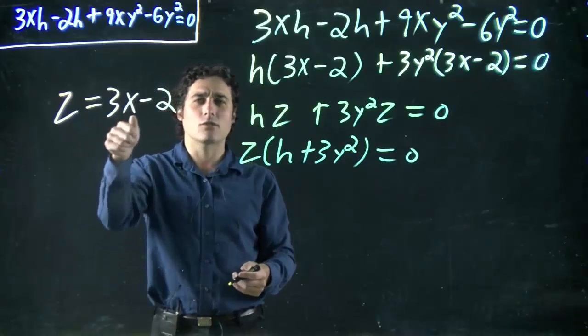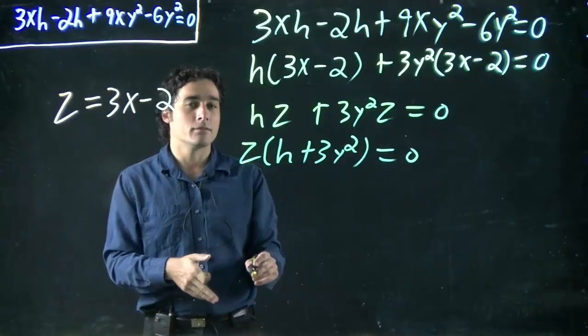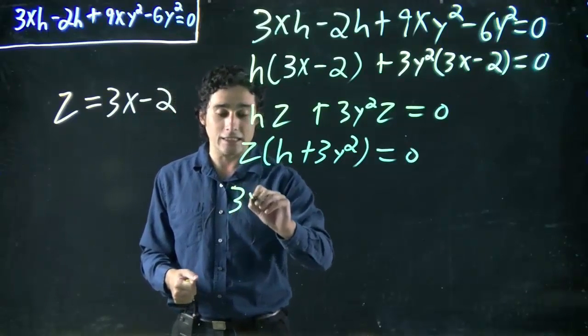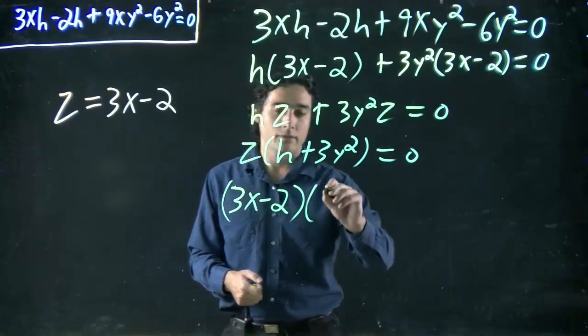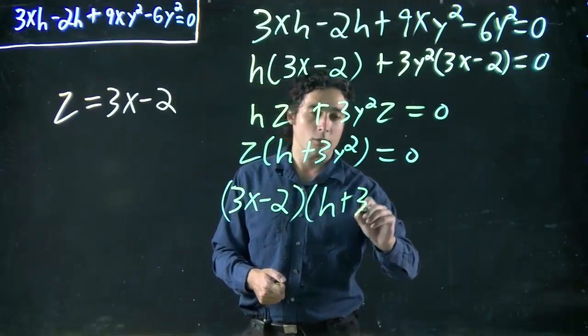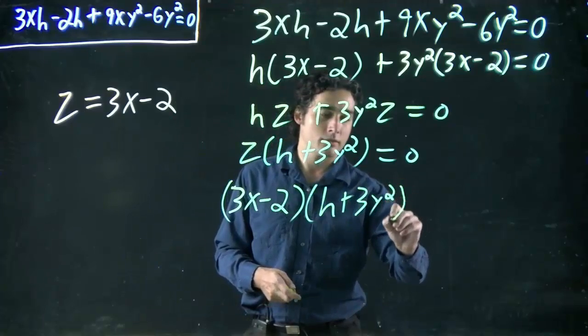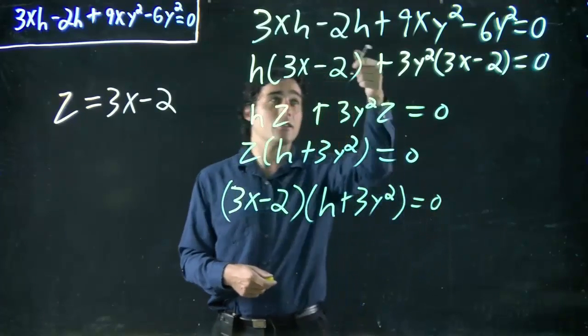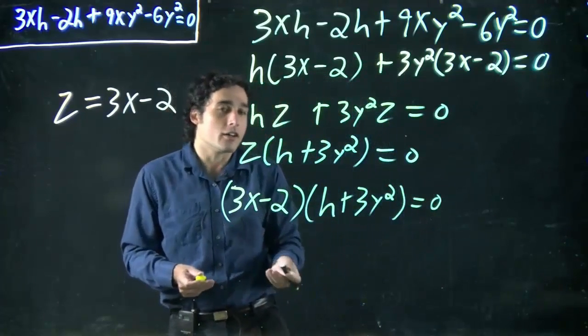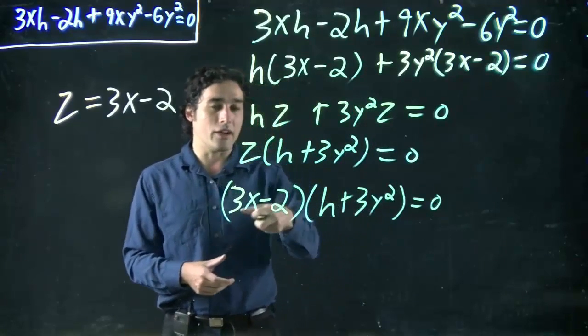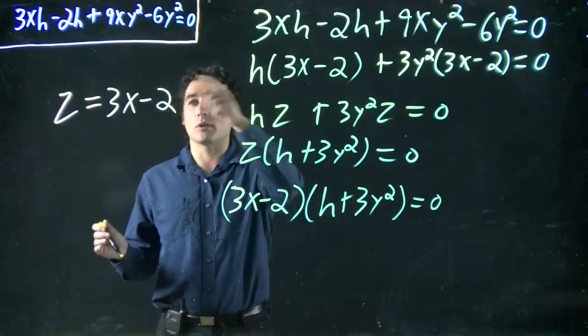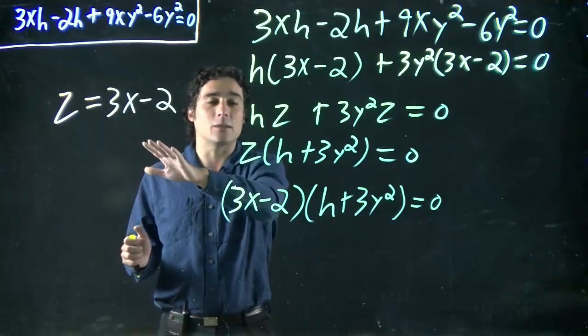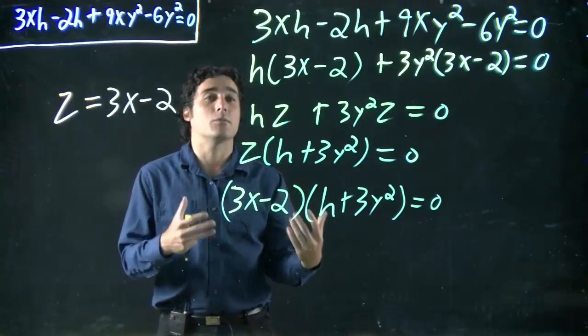But z is actually 3x minus 2. So let's put that back in. Again, this might seem kind of silly. This was just to help us visualize it.